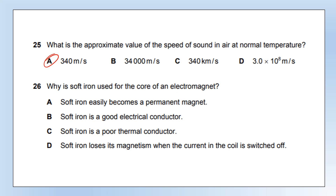Why is soft iron used in the core of an electromagnet? 'Soft iron easily becomes a permanent magnet' — false; hard materials are needed for permanent magnets. 'Soft iron is a good conductor' — nothing to do with magnetism. 'Soft iron is a good thermal conductor' — thermal conduction is unrelated to electromagnetism. 'Soft iron loses its magnetism when the current is switched off' — yes, that's what we want. An electromagnet should be on with current and off without it, switching quickly so we can control it effectively.